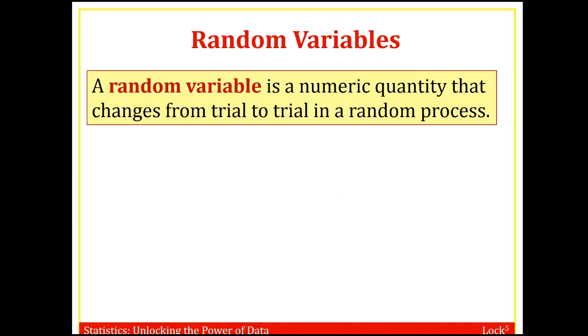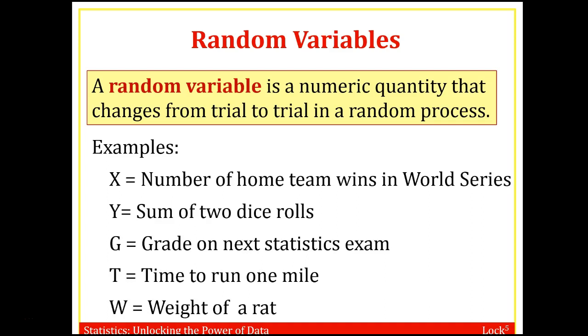Alright, so first definition: a random variable is a numeric quantity that changes from trial to trial in a random process. And for our class, it could be really almost anything. So looking at some examples, it could be the number of home team wins in the world series. If we're rolling two six-sided die, we'll do some of this in class. It'd be the sum of the two dice rolls.